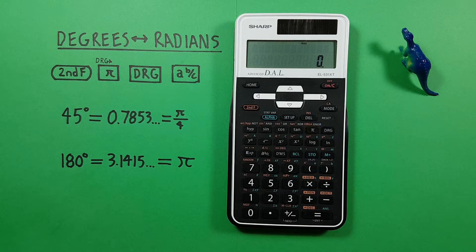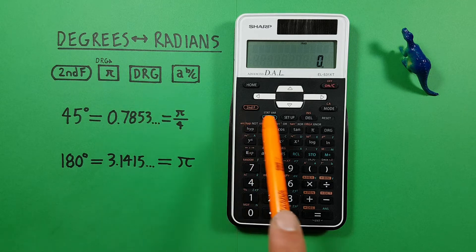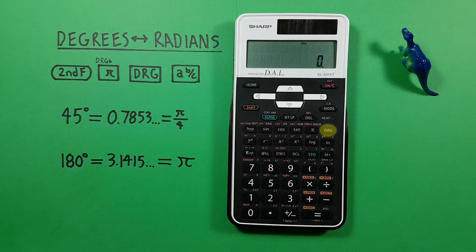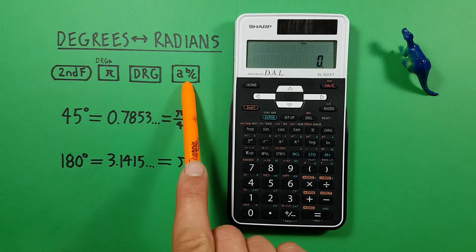The DRG or degrees radians gradians mode key that looks like this located here. And the fraction key that looks like this located here.